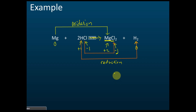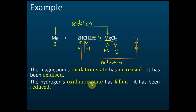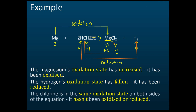So that is how we identify oxidation and reduction: first find the oxidation numbers, then check whether they increase or decrease. Magnesium's oxidation state increased from 0 to +2, so it has been oxidized. Hydrogen's oxidation state fell from +1 to 0, so it has been reduced. Chlorine remains at −1 on both sides, so it has not been oxidized or reduced.